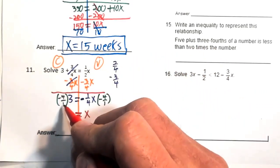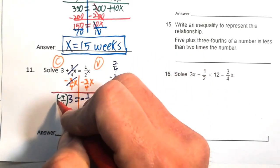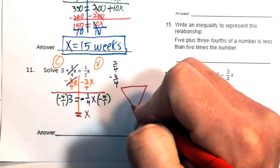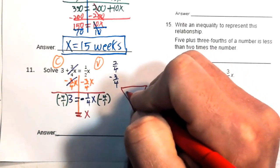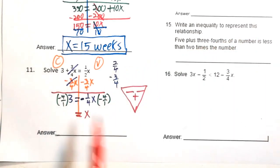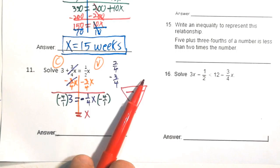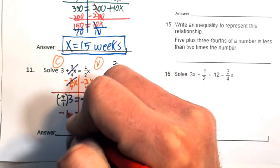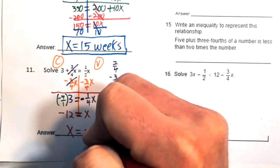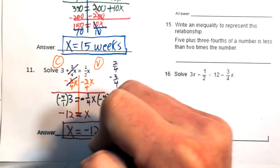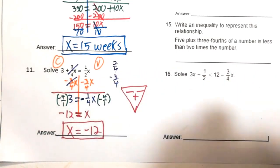Negative four over one is the same as negative four. Negative four times three: negative times positive is negative, so the answer is negative 12.